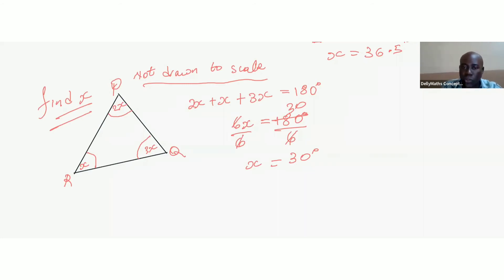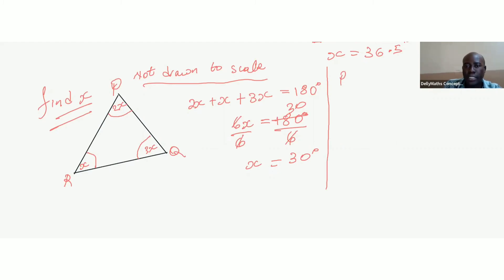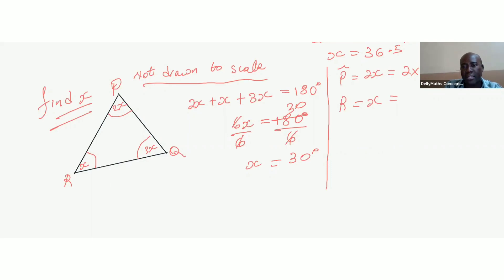Now that x equals 30 degrees, if there's a follow-up question asking us to find all the angles at P, Q, and R: the angle at P is 2x, so 2 times 30 equals 60 degrees. The angle at R is x, which equals 30 degrees. The angle at Q is 3x, so 3 times 30 equals 90 degrees.